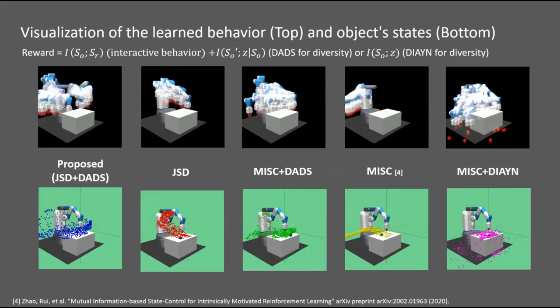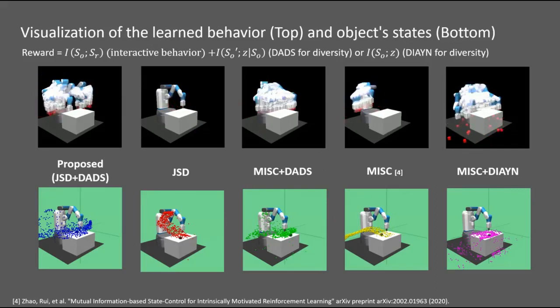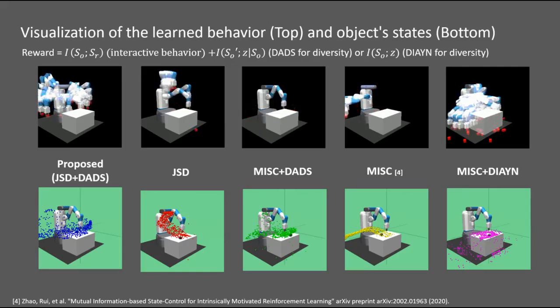The interaction behavior learned by each different mutual information objectives are visualized. We could find that the proposed method shows the most diverse interacting behavior compared to other baselines. Using only MIS-C shows almost similar behavior, and DIAYN added one frequently misses the object.